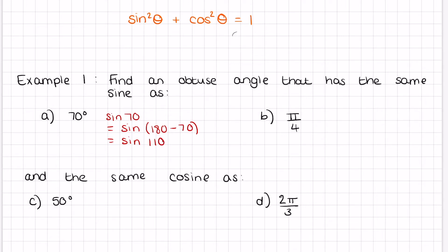Sin(70°) equals sin(110°), so they're equal. We can do the same in radians: sin(π/4) equals sin(π − π/4), because π is the same as 180 degrees, which equals sin(3π/4).